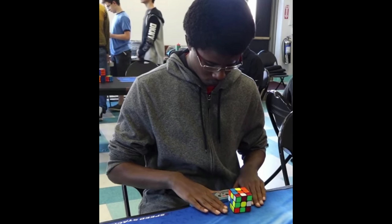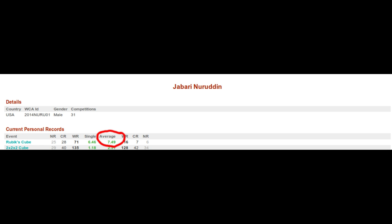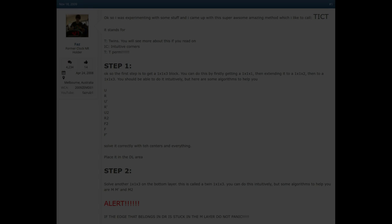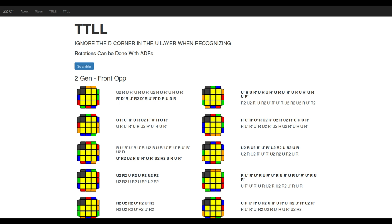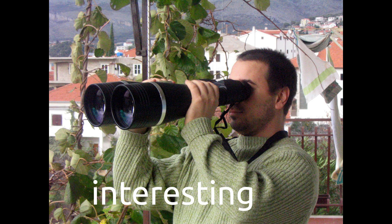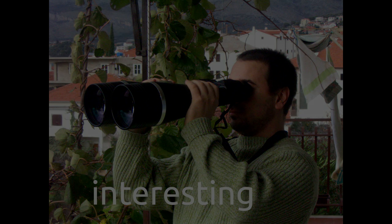Jabari is the only known cuber to achieve a sub-10 average using full ZB. It's certainly not the worst method in the world. It kick-started the idea of finding a practical method for reducing the number of last layer cases by influencing during F2L, and ZZCT can almost be seen as a successor. In any case, it's definitely worth a look for any cuber interested in methods that may not have taken off for one reason or another.